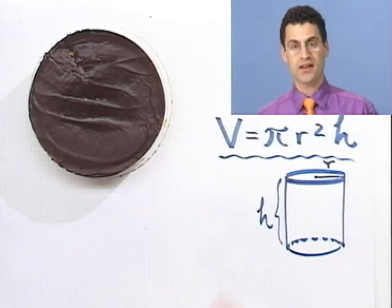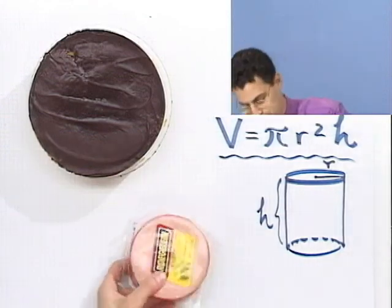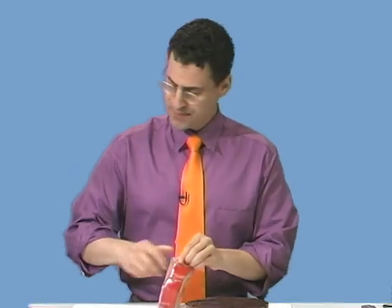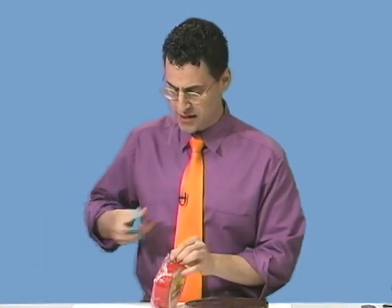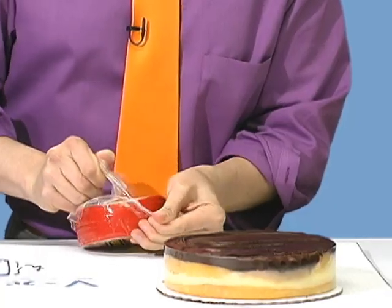But the way to see that formula and actually understand that formula is to think about the bologna again. Let me take the bologna really fast and see if I can open it up. I hope it's not too juicy. These bolognas are really juicy. You know, if you think about it, a cylinder is just a thickened circle.